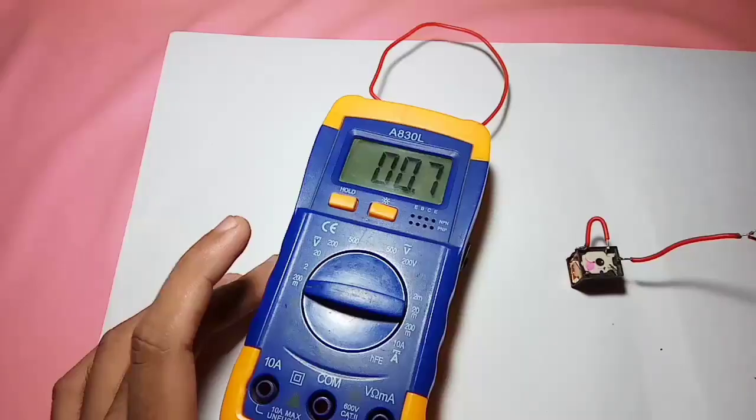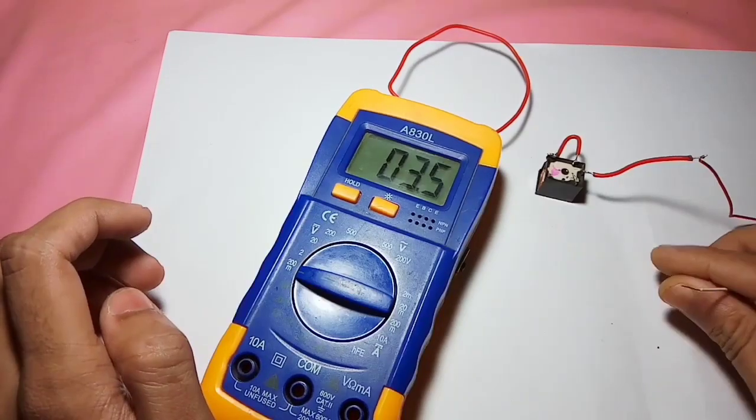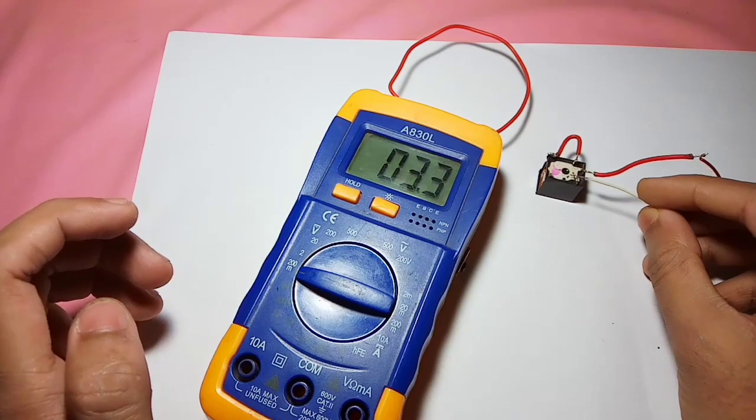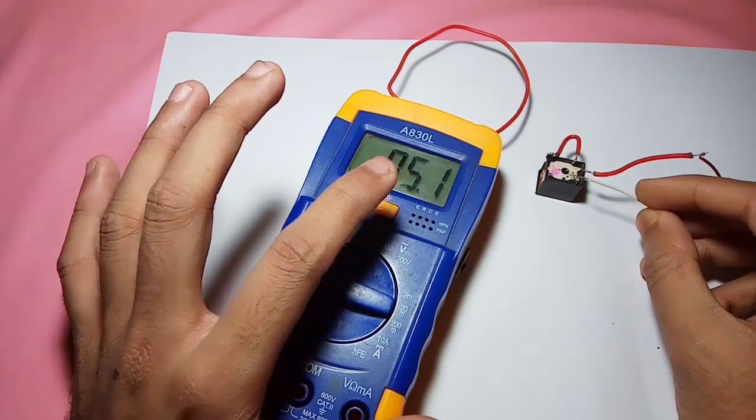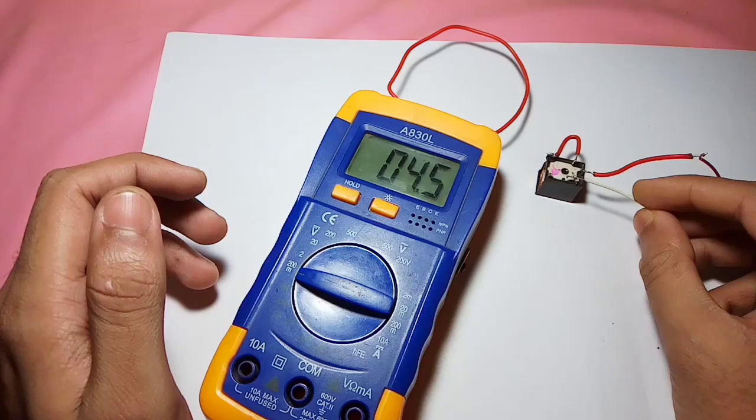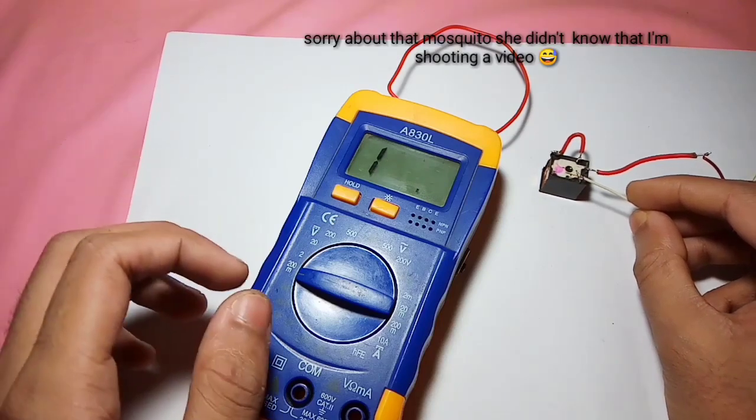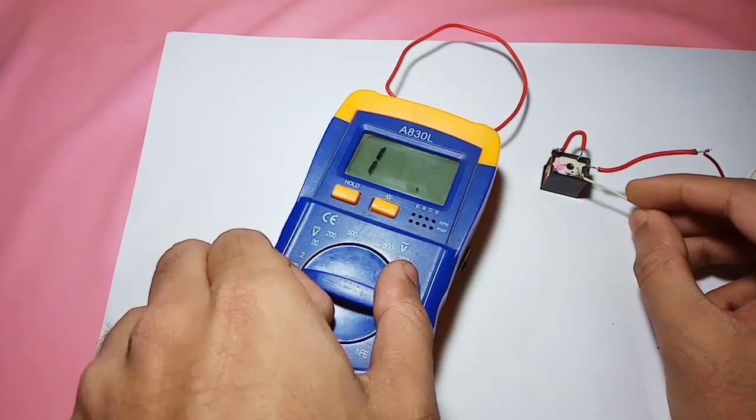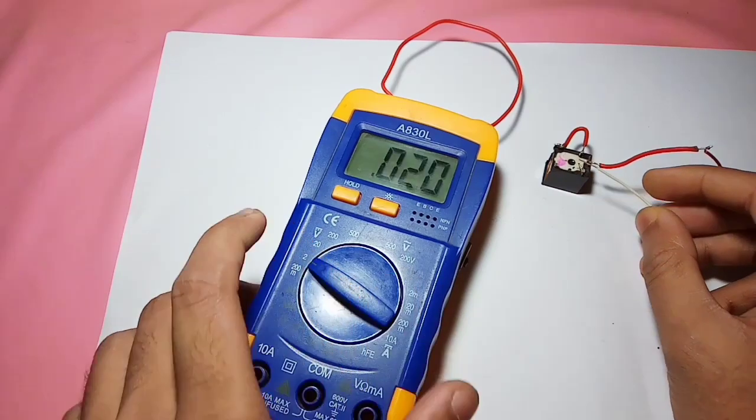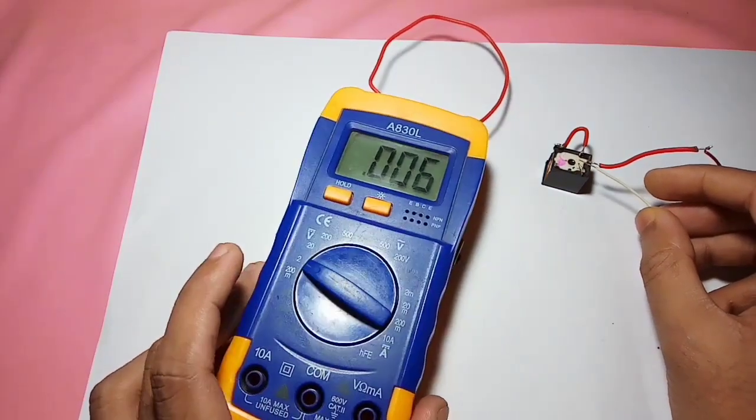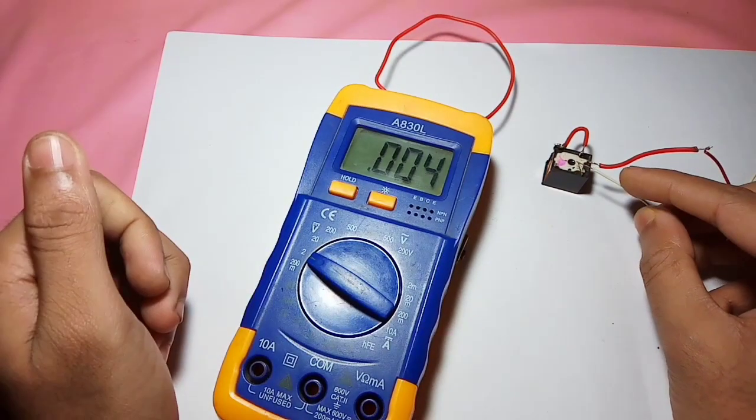It gets off scale, so I will put the knob in the 2-volt division. Now you will see the voltage reading on the screen. It gets around 600 millivolts, 700 millivolts.